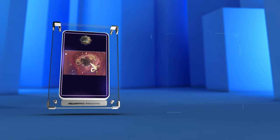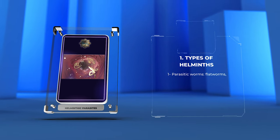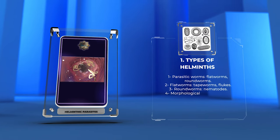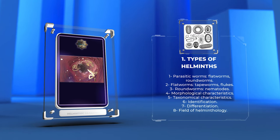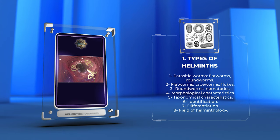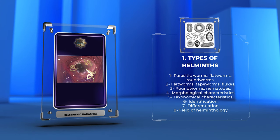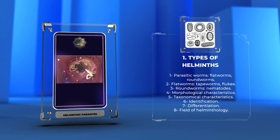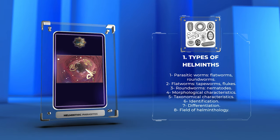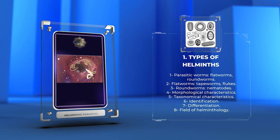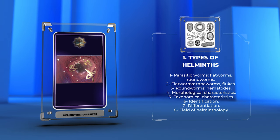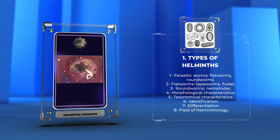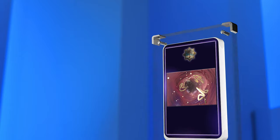Parasitic worms, or helminths, can be classified into two main groups: flatworms — tapeworms and flukes — and roundworms, or nematodes. Each group has unique morphological and taxonomical characteristics which help in their identification and differentiation in the field of helminthology.